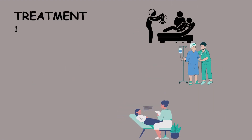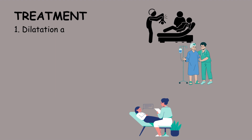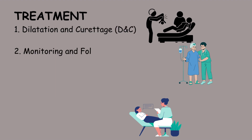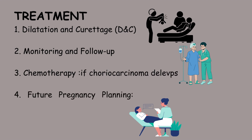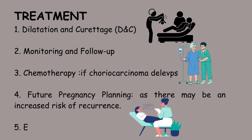Treatment for gestational trophoblastic disease includes dilatation and curettage, chemotherapy for choriocarcinoma if it develops, monitoring and follow-up, future pregnancy planning due to recurrence risk, and emotional support.